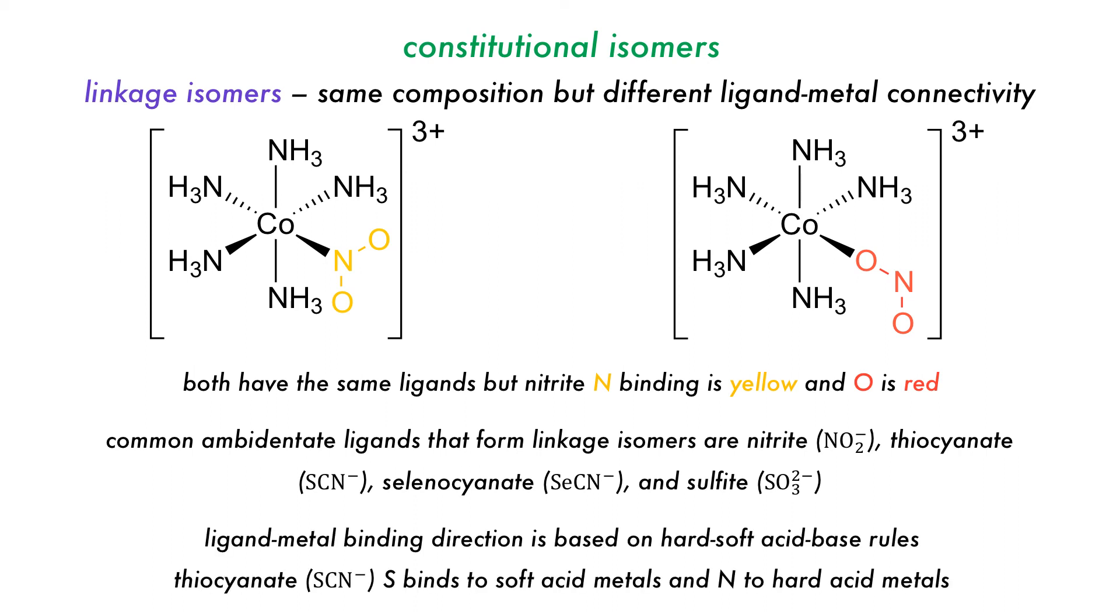The binding of these ambidentate ligands is often driven by hard, soft, acid-base principles. For example, thiocyanate will bind through the S to soft acid metals and through the N to hard acid metals.